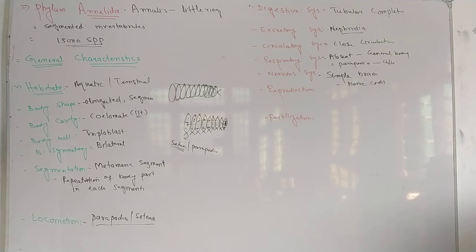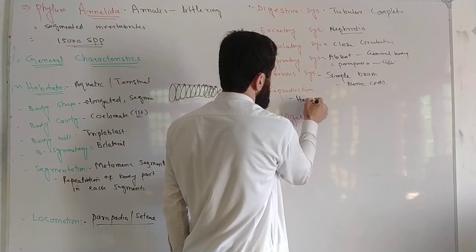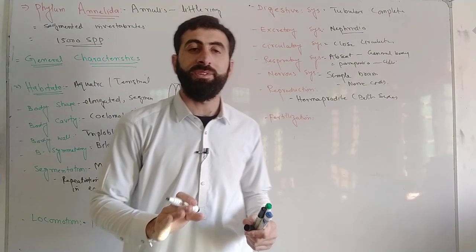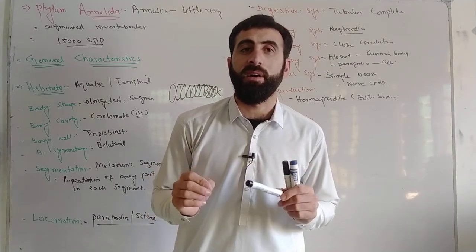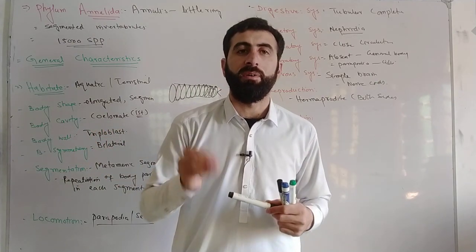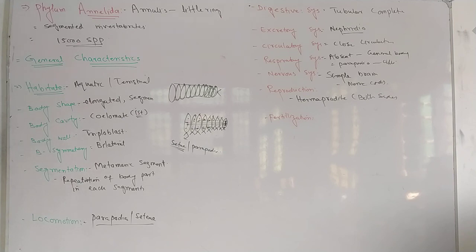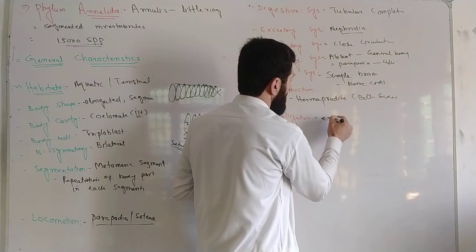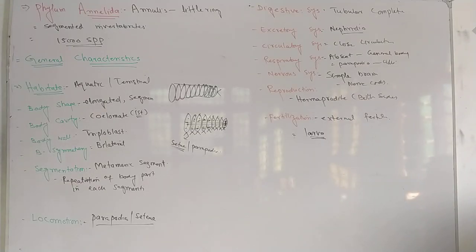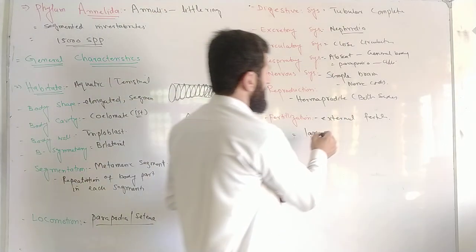Now we are talking about the reproductive system. Mostly Annelids are hermaphrodite. Most are hermaphrodite, contain both sexes, means that there is one organism with testes present and ovaries present. Such type of organism is called hermaphrodite which contains both sexes—male and female organs. In one organism, male and female reproductive organs are present. Here the fertilization is external fertilization. Some organisms form larva, which is called trochophore larva. Trochophore larva.